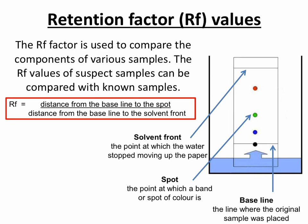Importantly, we need to be able to calculate from paper chromatography. This involves the calculation of a retention factor, or an RF value. This allows us to compare the components of various samples, and the RF values can then be compared with known RF values for other chemicals. To do this, we need to correctly identify a chromatography paper. On our chromatography paper, we have our baseline — this is the point where the chemicals start. The baseline must be drawn in pencil, as if it was drawn in ink, the ink would dissolve into the liquid and interfere with our results.